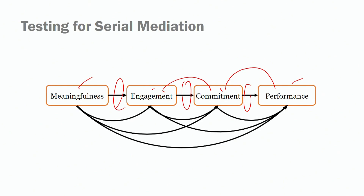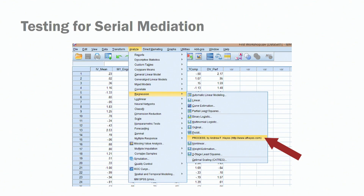For parsimonious models, we want to keep it simple. Usually we look at two, perhaps three mediators — not more than that, otherwise it becomes too complex and too difficult to explain in your theoretical development. Now let's run this analysis. To run serial mediation models, go to Analyze, and if you've watched prior sessions you'll be familiar with this. Go to Analyze, then all the way down to Regression.